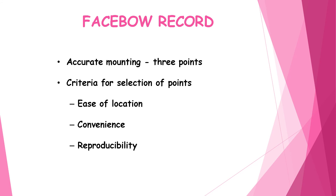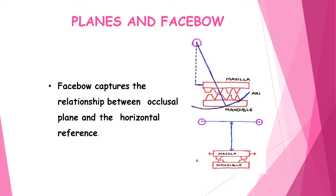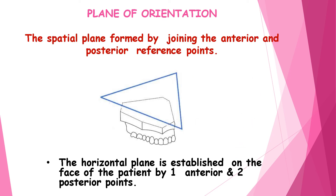For a facebow record, three reference points are required for accurate marking. The criteria for selection of these points are ease of location, convenience, and reproducibility. The facebow captures the relationship between the occlusal plane and the horizontal reference plane. The plane of orientation is the spatial plane, which is formed by joining the anterior and posterior reference points.